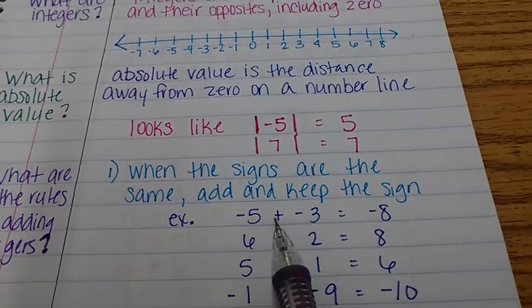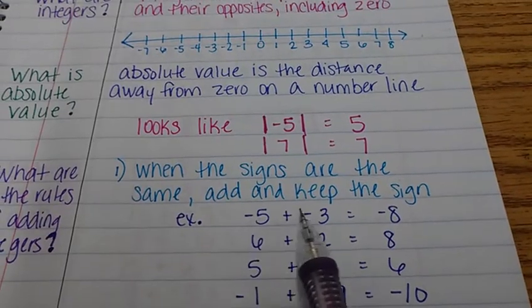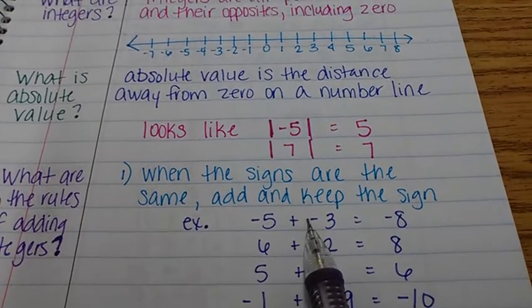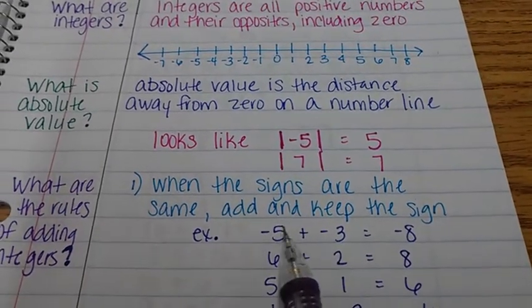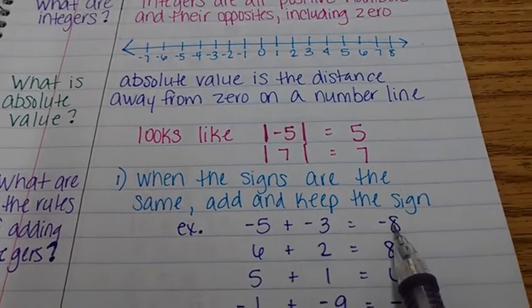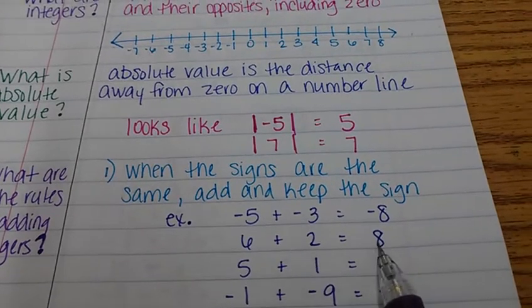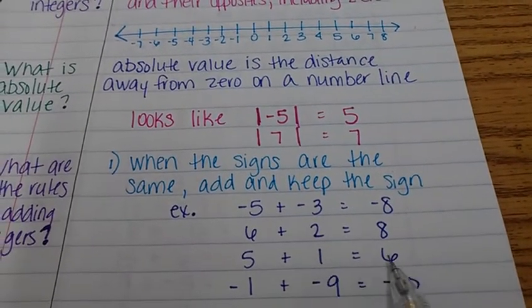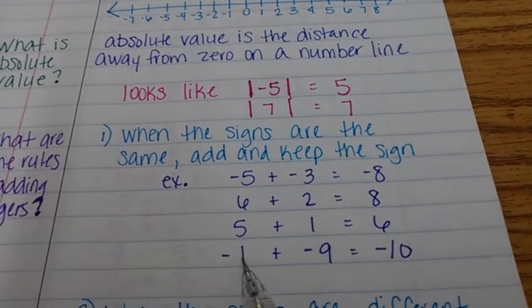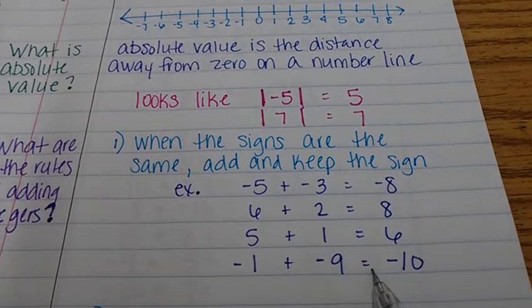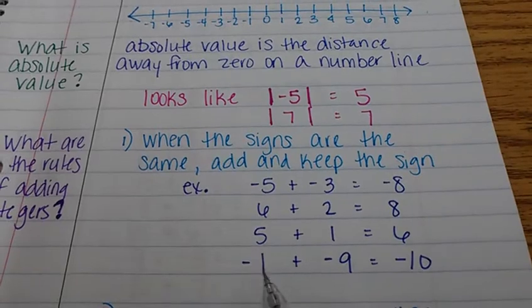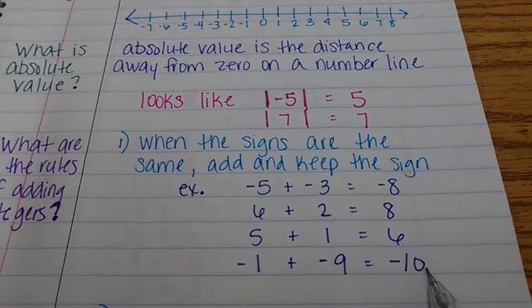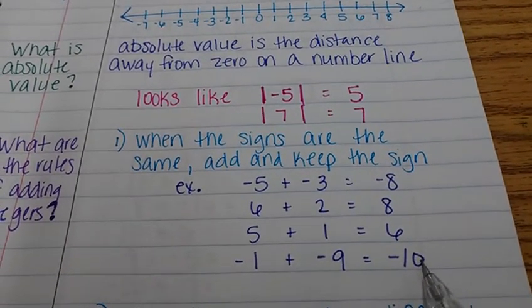Negative five plus negative three. Well, five is a negative and three is a negative. They have the same sign. So you're just going to add those up. Five plus three is eight. But because they're both negative, your answer is negative. Six plus two is eight. Five plus one is six. Negative one plus negative nine is negative ten. So our signs are both negative. We just add them up and keep our negative sign. That's the easy part.